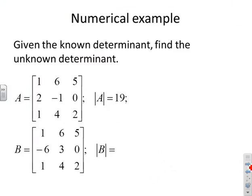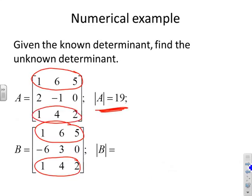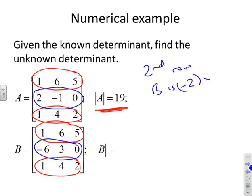Given a known determinant, find the unknown determinant. Here det(A) = 19 and we must find det(B). The first and third rows of A and B are identical; the difference is in the second row, where B's second row is −3 times A's second row. Therefore det(B) = −3 × 19 = −57.